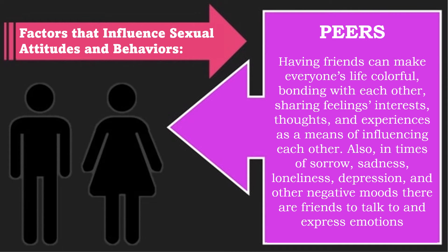Peers: Like the family, peers or friends can also have a significant impact on an individual's view regarding human sexuality. Having friends can make everyone's life colorful — bonding with each other, sharing feelings, interests, thoughts, and experiences as a means of influencing each other. Also, in times of sorrow, sadness, loneliness, and depression, there are friends to talk to and express emotions. Friends also affect how people shape their attitudes and behaviors towards sexuality-related circumstances.